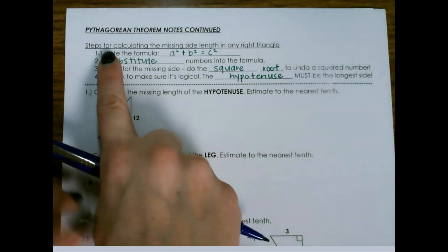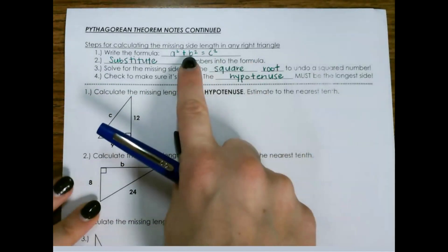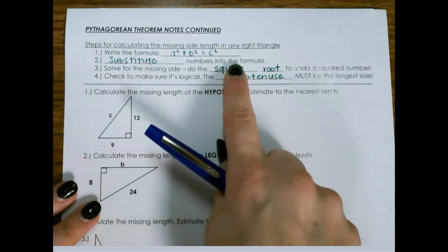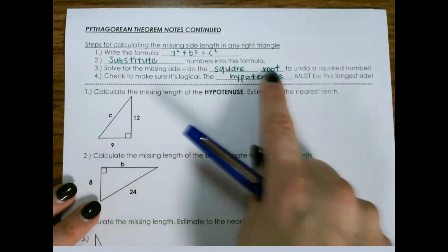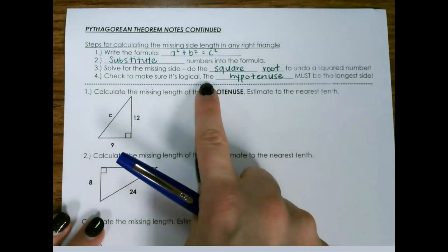Pythagorean Theorem. The steps for calculating the missing side length in any right triangle: The formula is a squared plus b squared equals c squared. Substitute the numbers into the formula, solve for the missing side, do the square root to undo a squared number, and check to make sure that it's logical.